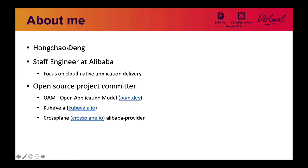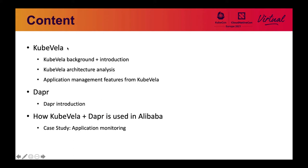Before we start, let me introduce myself. My name is pronounced as Hong Chao Dan. I'm currently working as a staff engineer at Alibaba, focusing on cloud native application delivery. I love open source and have been contributing quite a while. I am a committer of KubeVela, OAM, and Crossplane projects.